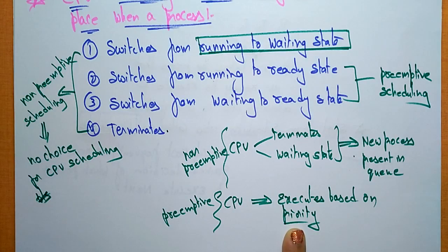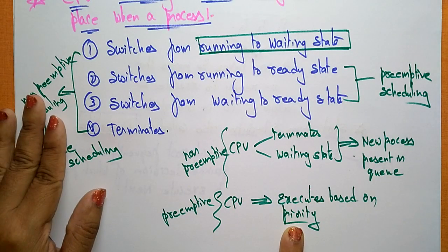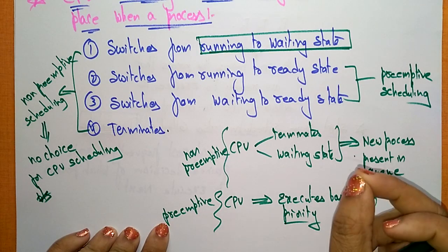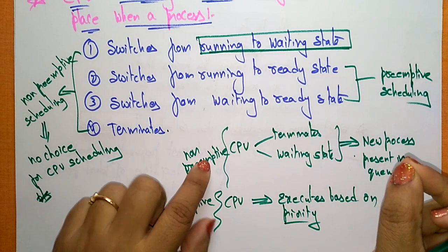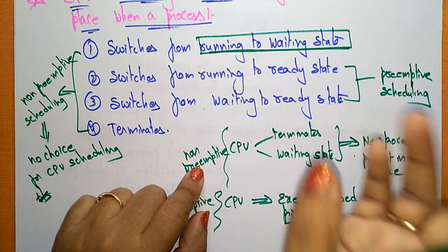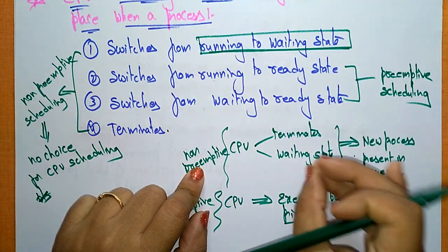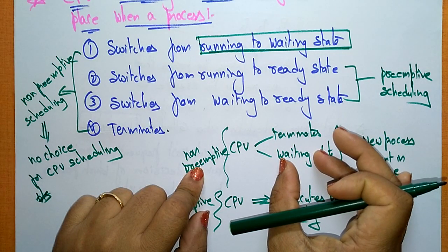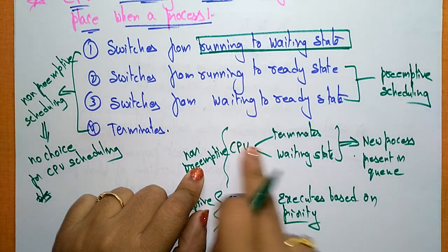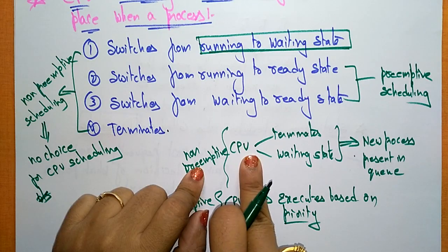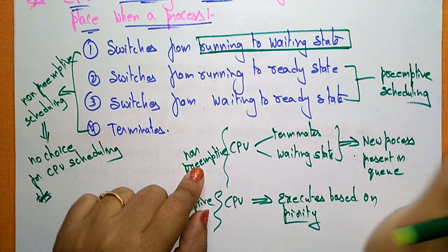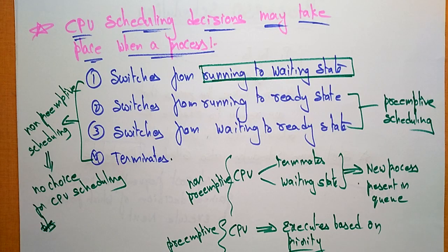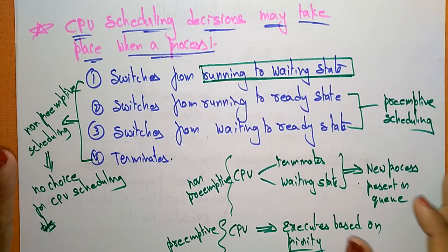The CPU stops the current process and takes the priority request to execute it. Preemptive means the processor has a choice — it can take the higher-priority process. Non-preemptive means the process has no choice; it must complete until it terminates or enters waiting state. Until that process is released from the CPU, it cannot take any interrupted request. These are the CPU scheduling decisions when a process changes its states.